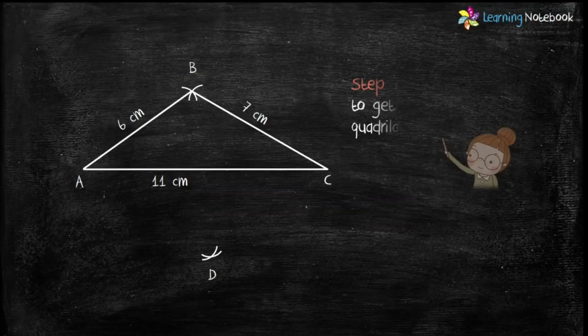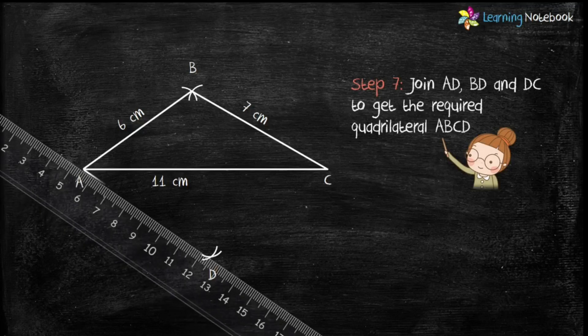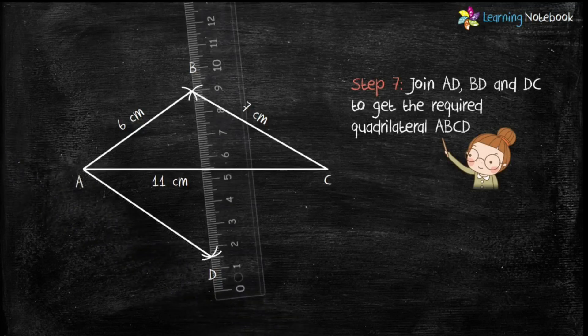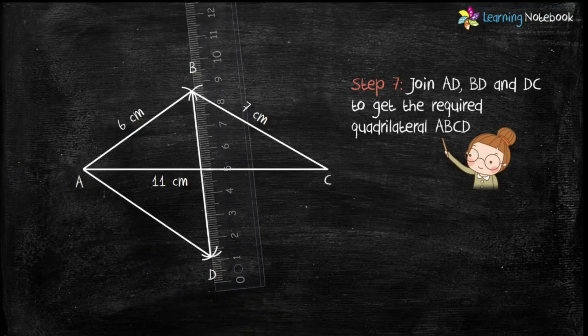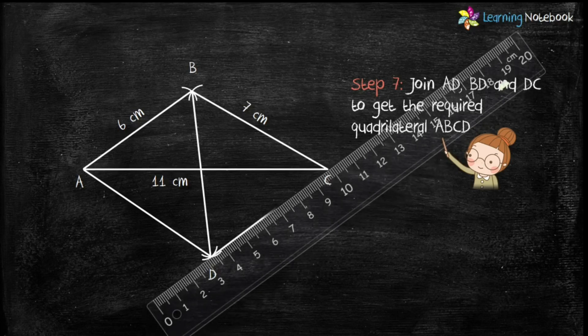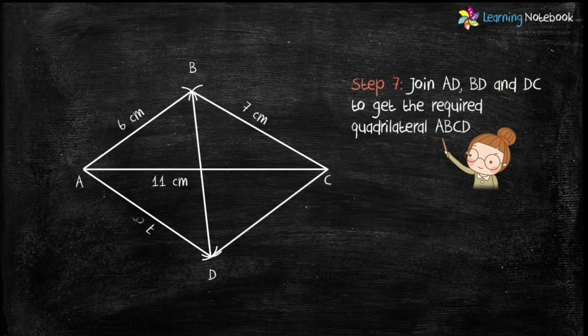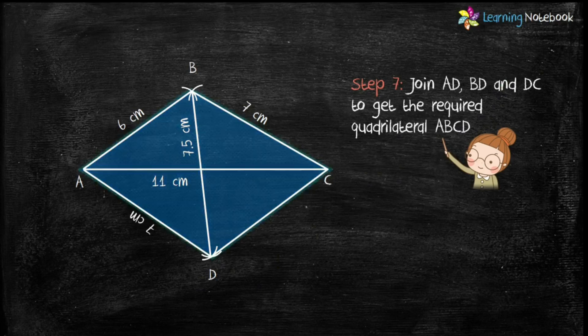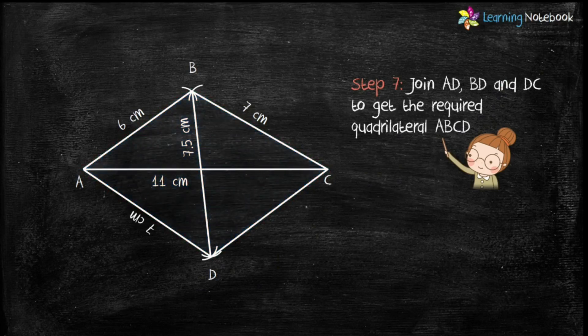In the last step, join AD, BD, and DC to get the required quadrilateral ABCD. Also mark the measurements. So students, this is how we construct a quadrilateral when length of its three sides and two diagonals are given to us.